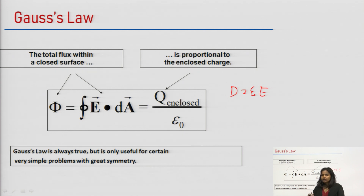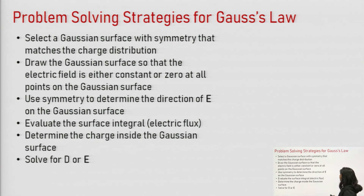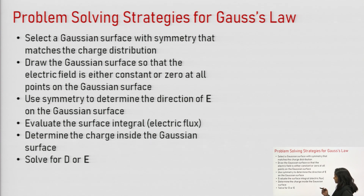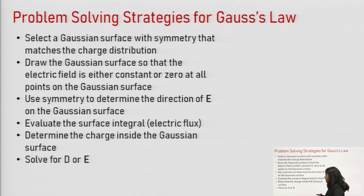In order to use Gauss law to find electric field or electric flux density, symmetry should be there. These are the problem-solving strategies for Gauss law. The first and foremost step is to select a Gaussian surface with symmetry that matches the charge distribution. Second, draw the Gaussian surface so that the electric field is either constant or zero at all points on the Gaussian surface. Use symmetry to determine the direction of E on the Gaussian surface. Then evaluate the surface integral, or electric flux.